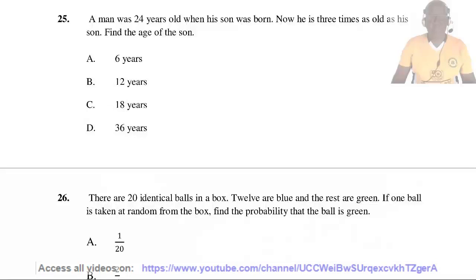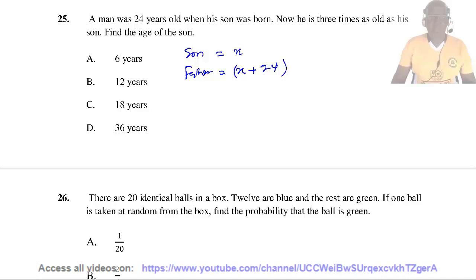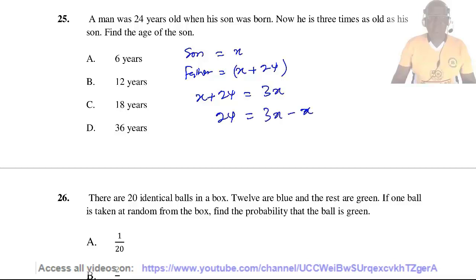Question 25. A man was 24 years old when his son was born. Now he is 3 times as old as his son. Find the age of his son. Let the son's age be S; his father's age is S plus 24. Since his father's age is 3 times his son's: S plus 24 equals 3S. So 24 equals 2S, giving S equals 12. The son's age is 12.